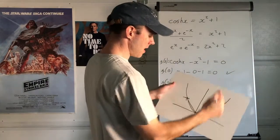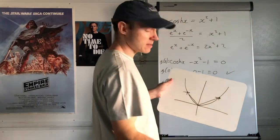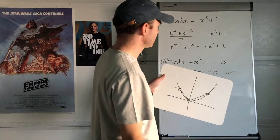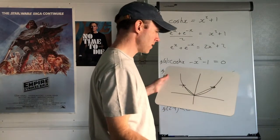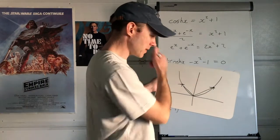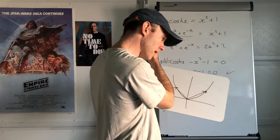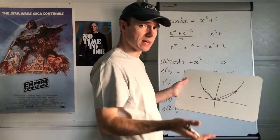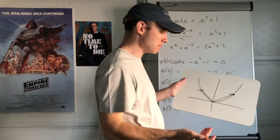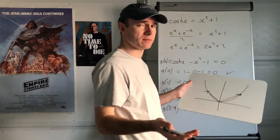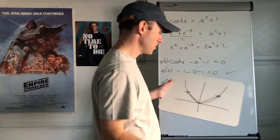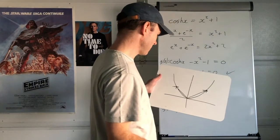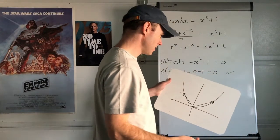So three intersection points total. I reckon that's it, I don't think there are any more. I'll explain my reasoning a little bit later — maybe think about why there aren't any more.